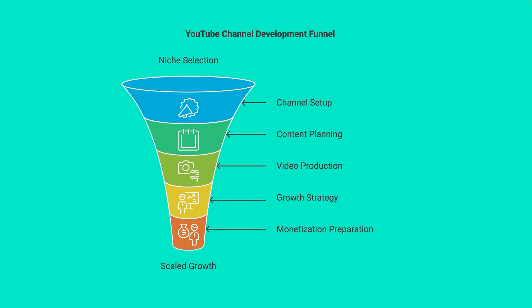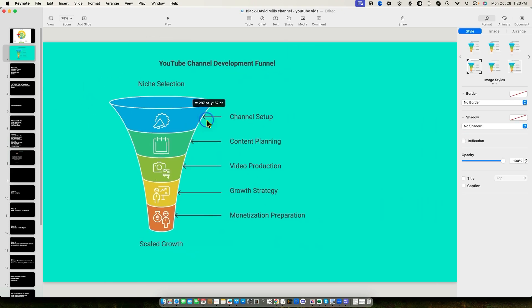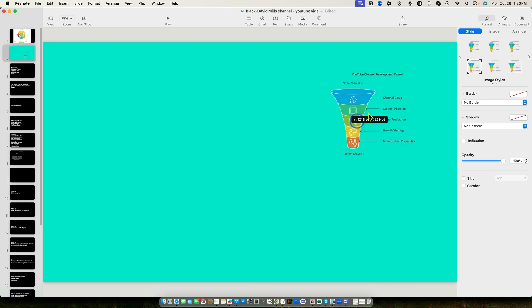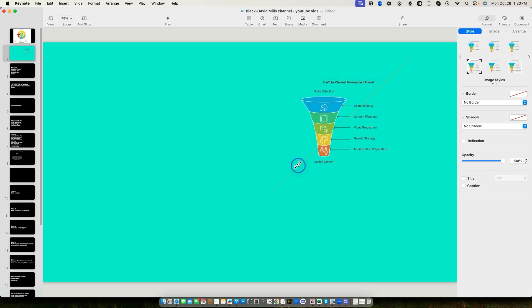Let me show you this AI infographic creator. What you're looking at on screen I just created really quickly - it's a YouTube channel development funnel. You can see over here the niche selection, and I've added the image into a Keynote slide. We have a full funnel with icons built in here that takes you along a journey. The channel setup is going to be the biggest part of the funnel. Look, I can move this around - it's a full-blown graphic with everything, the words and the text are attached to it. You can make it smaller, use it as a graphic in slides, and use it for social media or websites.